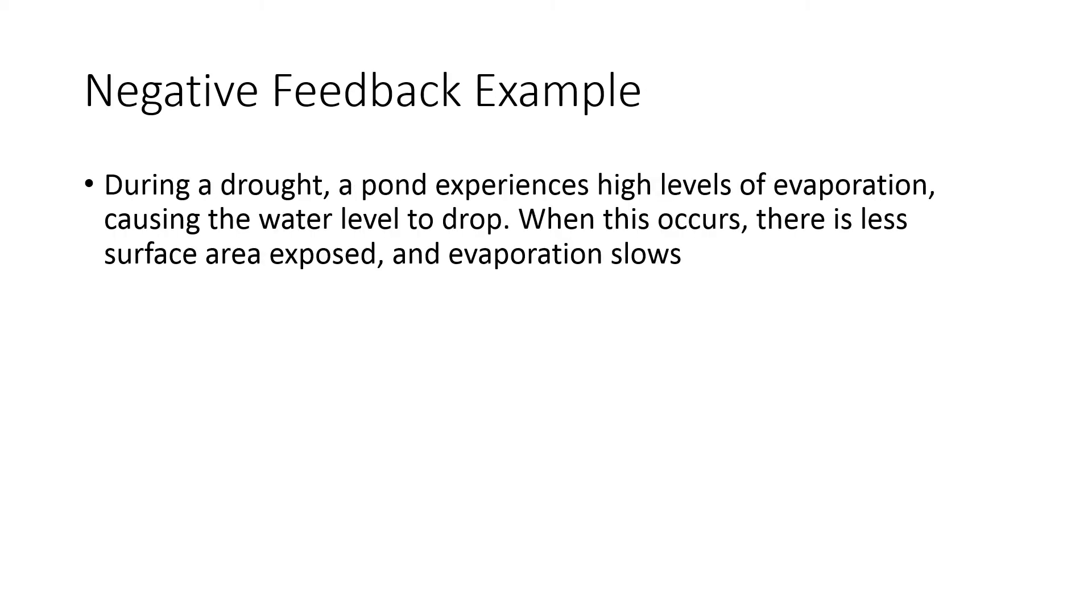One other example of negative feedback: if any of you happen to live near a small pond, you know it was quite dry this summer, and perhaps the level of that pond, the water level, began to drop. When that happens, there's less surface area exposed to direct sunlight, and therefore evaporation slows. This example of negative feedback will help prevent the over-evaporation of water.